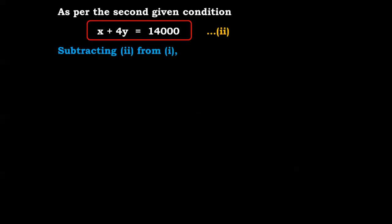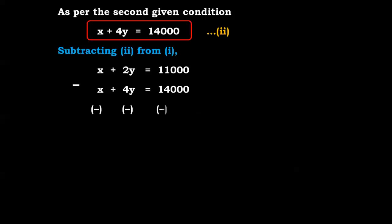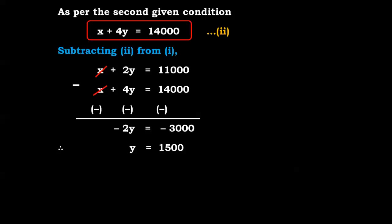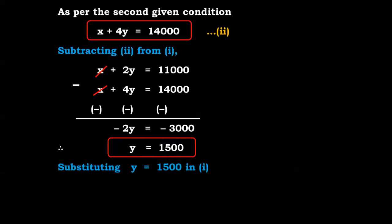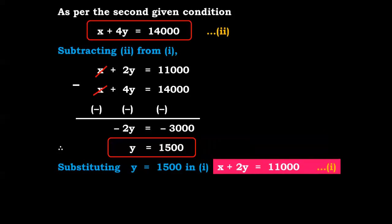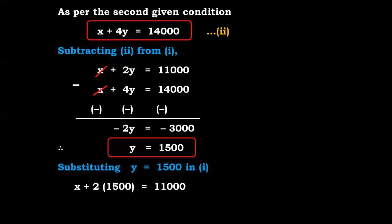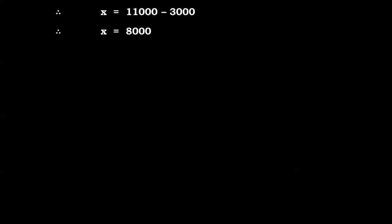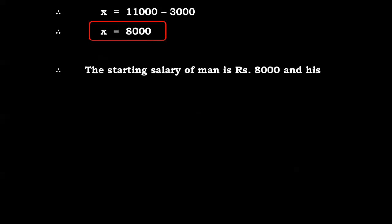Subtracting equation 1 from equation 2: (x + 4y) - (x + 2y) = 14,000 - 11,000, so 2y = 3,000, therefore y = 1,500. Substituting y = 1,500 in equation 1: x + 3,000 = 11,000, so x = 8,000. The starting salary of the man is rupees 8,000 and his fixed annual increment is rupees 1,500.